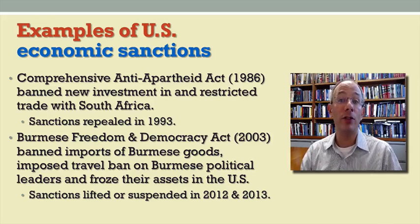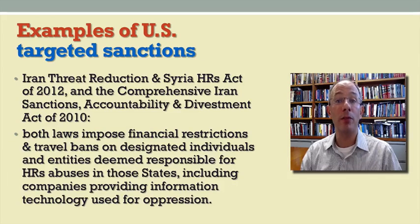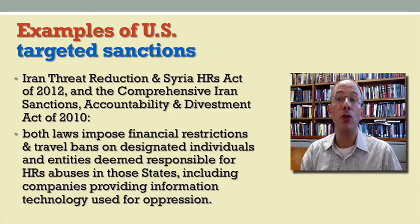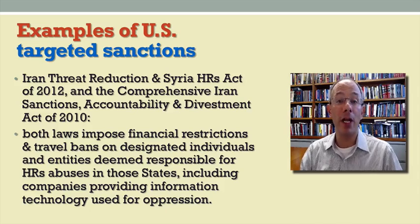Targeted sanctions include the following examples from Iran and Syria. These are quite recent statutes, and these laws impose financial restrictions and travel bans on designated individuals and entities deemed responsible for human rights abuses in those two countries. It's noteworthy that these include companies that provide information technology used for surveillance of dissidents or other forms of oppression.